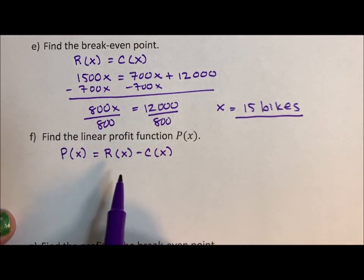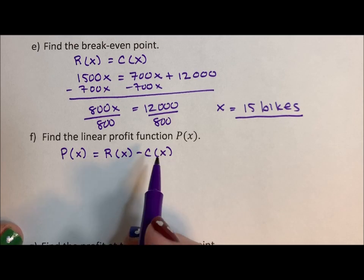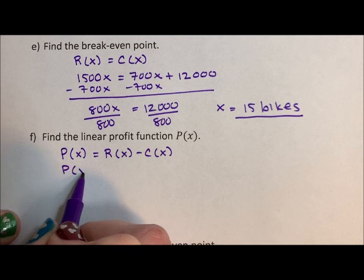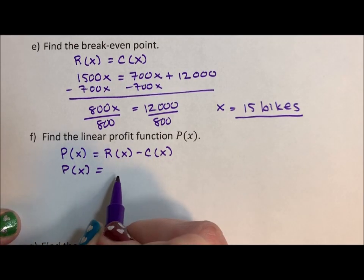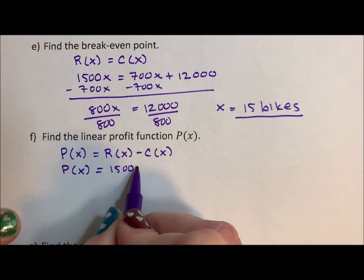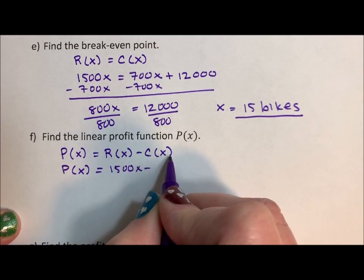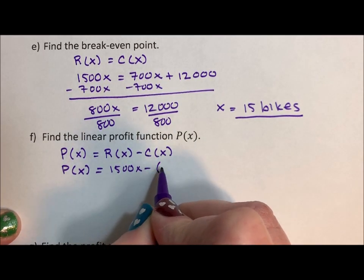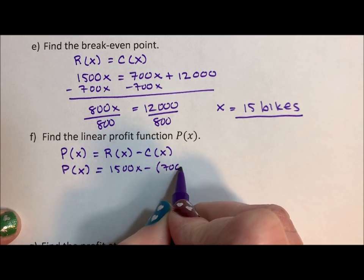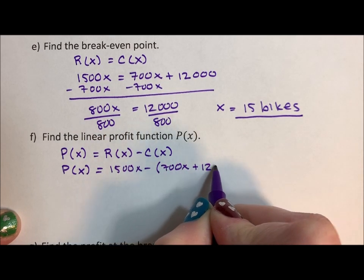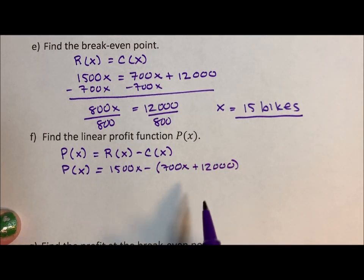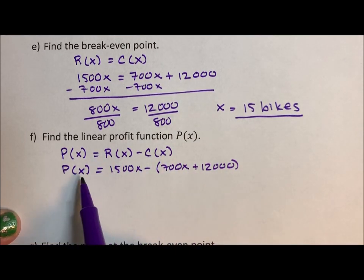It's revenue minus cost because we want revenue to be bigger. We want to be making more than we're spending. So profit function is going to be 1500x minus, and we are going to put cost in parentheses, 700x plus 12,000. If we don't, that 12,000 is going to remain a plus.